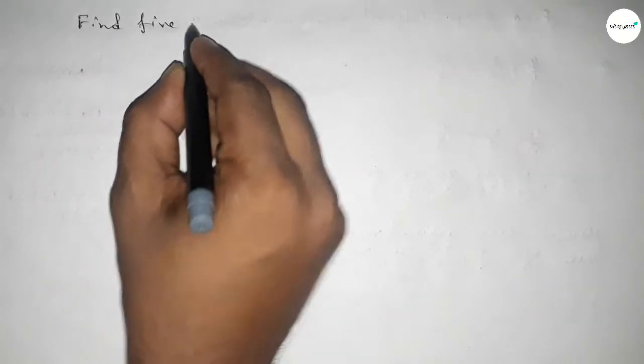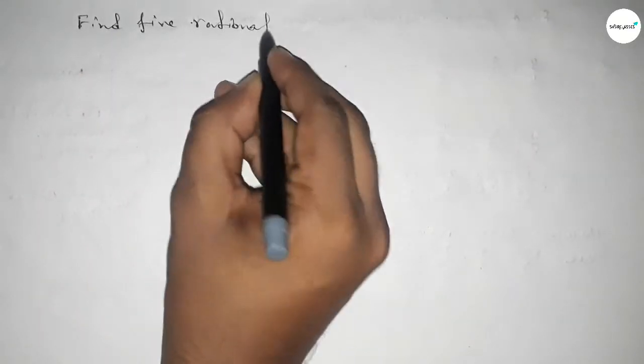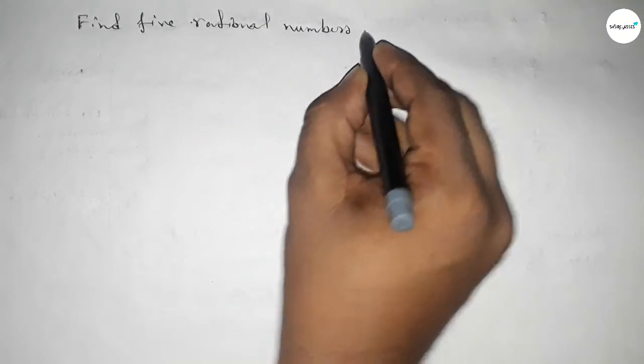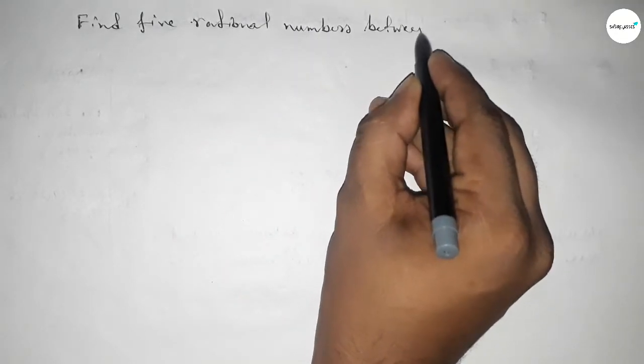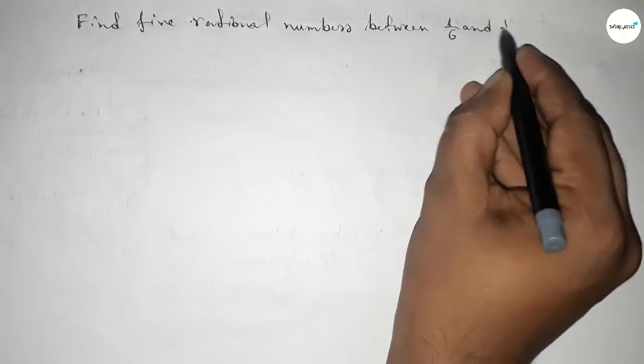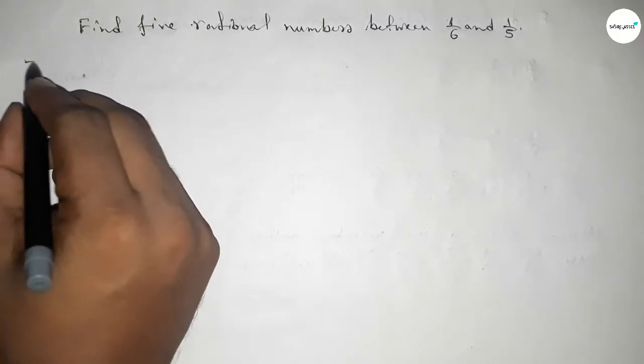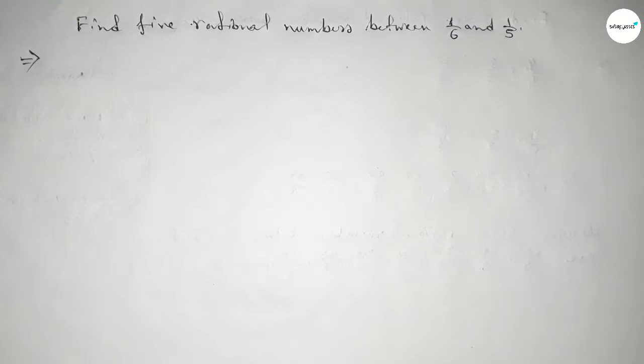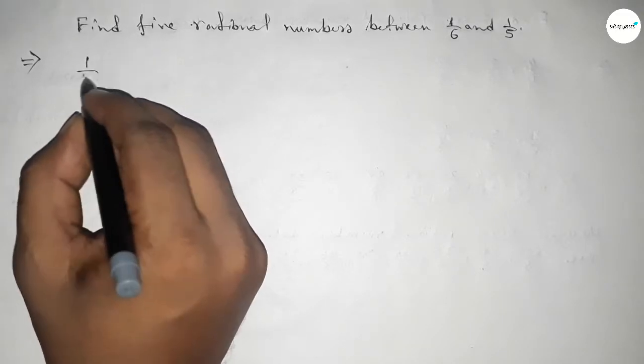Hi everyone, welcome to Sister Classes. Today in this video we have to find five rational numbers between 1 over 6 and 1 over 5. So let's start. First of all, write down here the given numbers: 1 over 6 and 1 over 5.